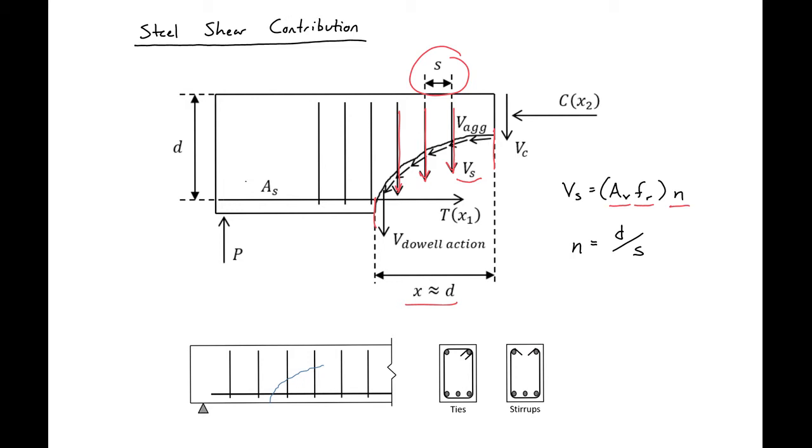We'll also assume that our stress in our shear reinforcement at ultimate is just going to be Fy. Putting all these values together gives us VS equals AV times Fy times D divided by S. This is the expression we use to find the shear strength provided from our steel rebar.